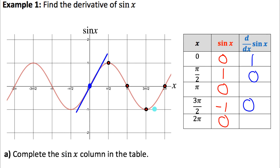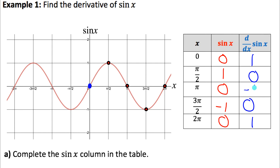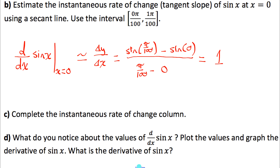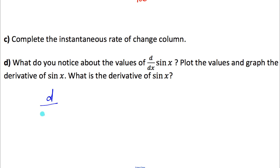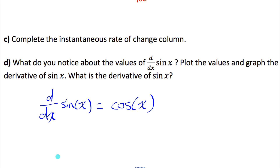Let's now plot all of these blue derivative points. At x equals zero the derivative is one, it goes down to zero at pi over two, negative one at pi, zero at three pi over two, and back to one at two pi. Notice what this looks like — it looks like the cosine function. And in fact, the derivative of sine x is cosine x. So we can conclude: the derivative with respect to x of sine x equals cosine x. The cosine function tells you the slope of the sine function at any point.